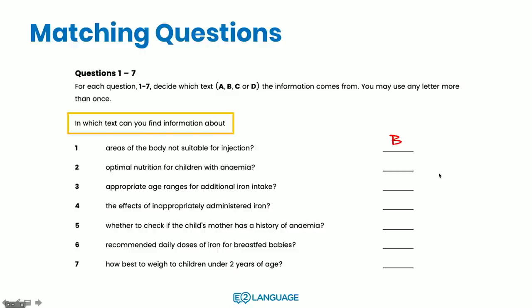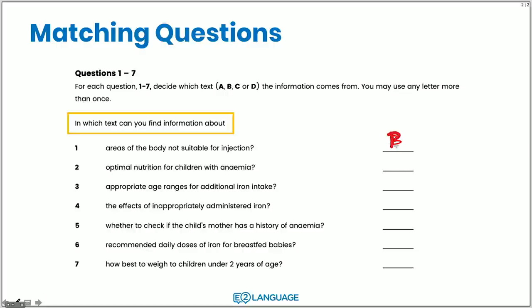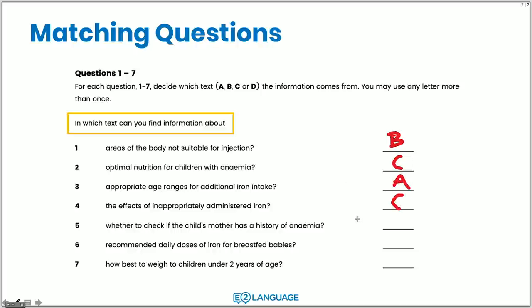Now that we've looked at just one of those texts, we're going to do some matching questions. In the real test, matching tests your ability to find out which text they're talking about — A, B, C, or D. Because we're just using one, we're going to do some keyword searching. When answering matching questions, you'll have a question that says 'in which text can you find information about...' and on your answer sheet you write which text — for example, text B, text C, etc. So that's how you mark your answer sheet.